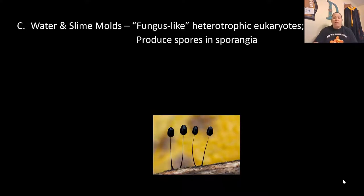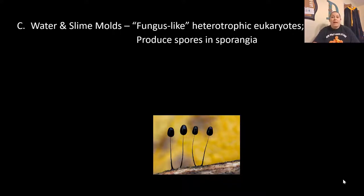We talked about algae and protozoa — the protozoa is the big group that's an issue when we talk about microbiology with sickness. We also have the water and slime molds. Water and slime molds are part of Protista — they are the fungus-like heterotrophic eukaryotes. They produce spores in sporangia similar to fungi, but they lack a lot of the structures a normal fungus would have, so they don't get to actually be part of the fungus group.